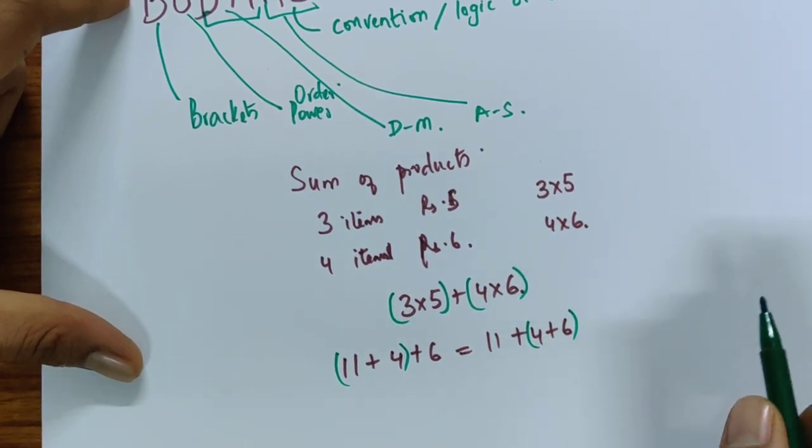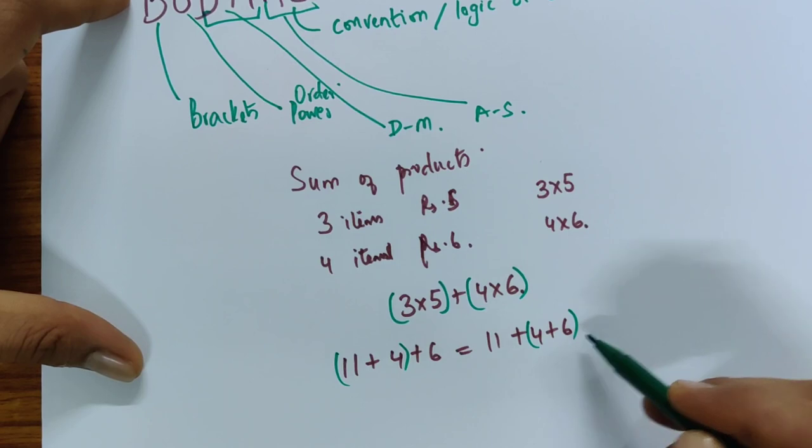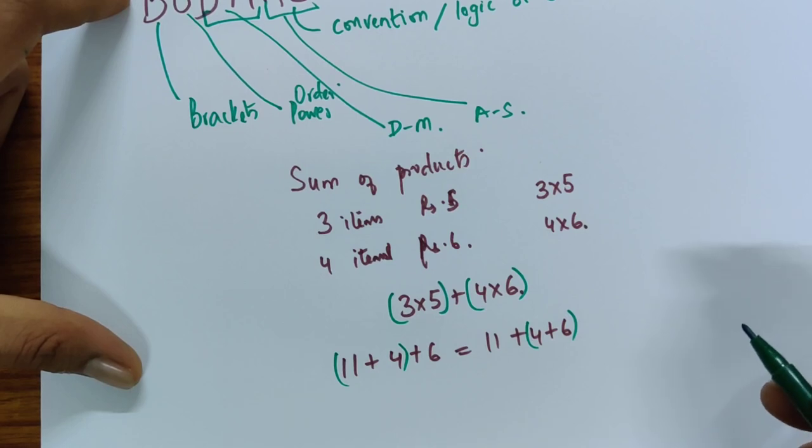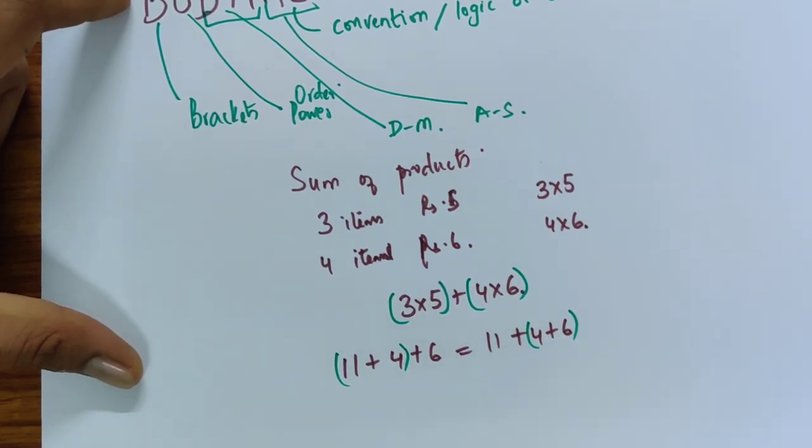It may be more convenient, it may be easier because we see pattern and say 4 plus 6 is 10 and then if I add 11 then I get 21. It may be easier but it is not necessary to do that to get the same result.